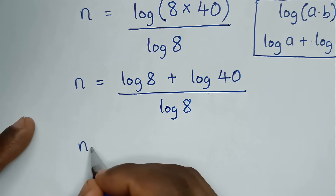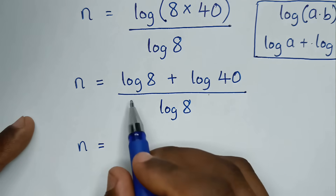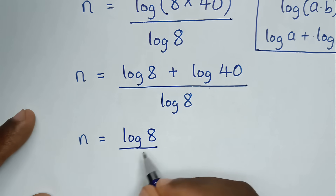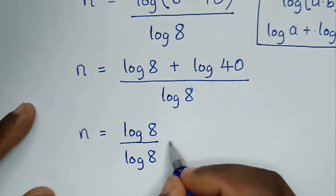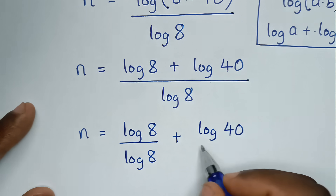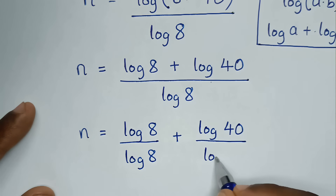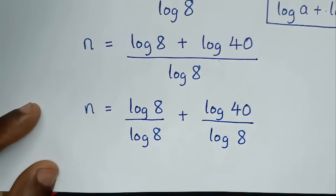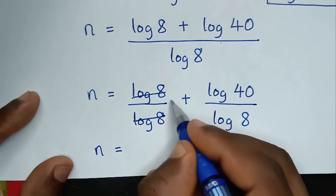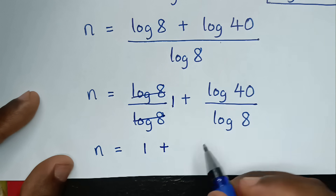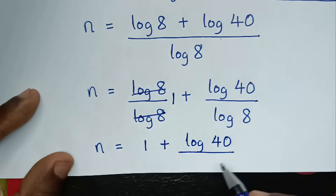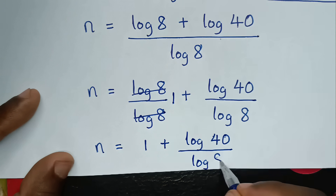Then in the next step, it will be n is equal to — we'll divide by log of 8 in each part — so log of 8 over log of 8, plus log of 40 over log of 8. Since log of 8 divided by log of 8 is 1, it will be 1 plus log of 40 over log of 8.